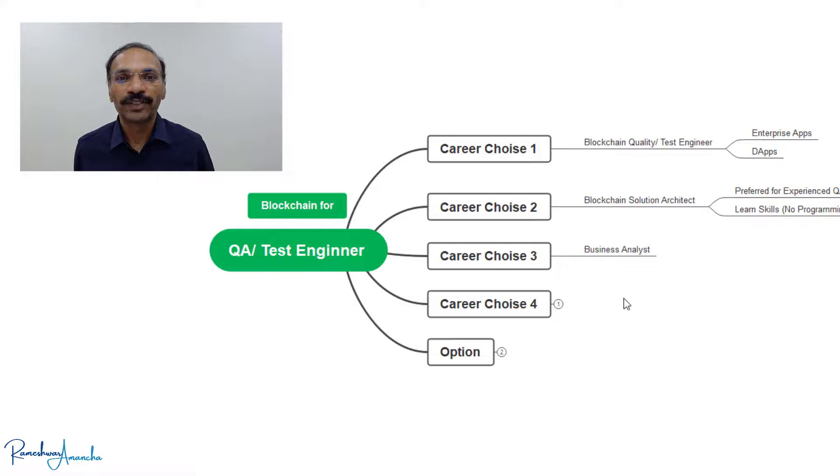The third option for you is you could become a business analyst. That requires a lot of business knowledge. And with the experience from QA, you could be adopting those skills pretty easily. So if you know how to document the scenarios, if you know how to write use cases, you could become a business analyst.